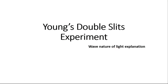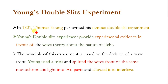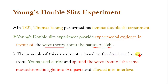Hello. In today's video lecture we will discuss in detail about the Young's double slit experiment. We will also discuss the wave nature of light. In 1801, Thomas Young performed his famous double slit experiment. Young's double slit experiment provides experimental evidence in favor of the wave theory about the nature of light. The principle of this experiment is based on the division of a wavefront. Young split the wavefront of the same monochromatic light source into two parts and allowed them to interfere.